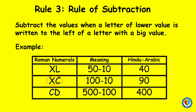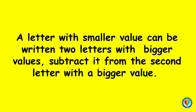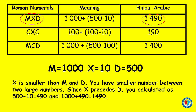Next, XC — X has a value of 10 and C has a value of 100. 10 is lower than 100, so XC will be 100 minus 10, which is equal to 90. Next, CD — C has a value of 100 and D has a value of 500. 100 is lower than 500, so CD will be 500 minus 100, which is equal to 400. A letter with a smaller value can be written between two letters with bigger values; subtract it from the second letter with a bigger value. Example: MXD equals 1490.